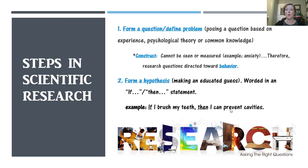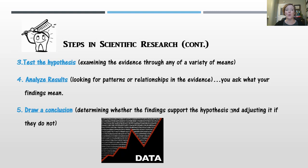So it's an educated guess and it's worded in a statement. Our third step in scientific research is to test the hypothesis, to actually do the study, to ask the questions, to run the experiment. So we're looking at the evidence. The fourth step is to look for patterns, to really dig into the data that we collected in step three. So you're going to analyze what you actually got and you ask yourself what all of that means. And then last, we draw a conclusion. We determine whether the findings that we collected, the data that we collected, if that supports our hypothesis, that if-then statement. And if they don't, then we may start back up at the beginning. So we may have to adjust our hypothesis.